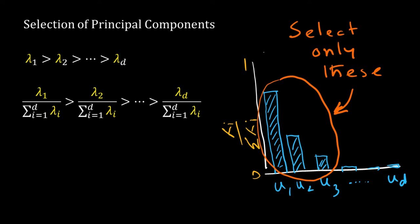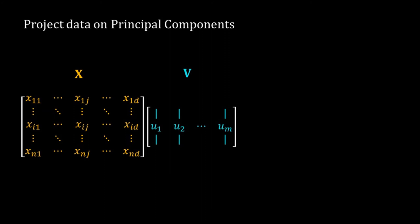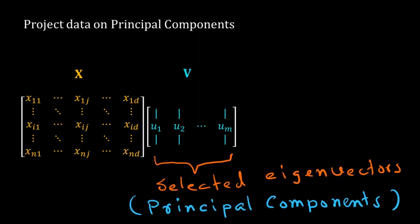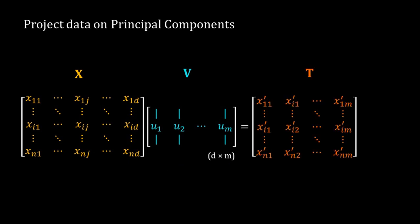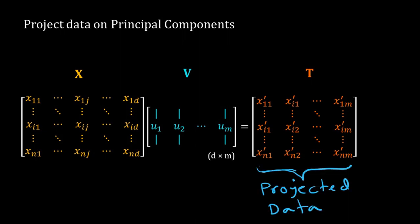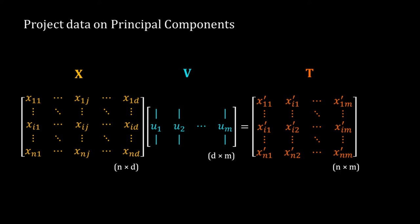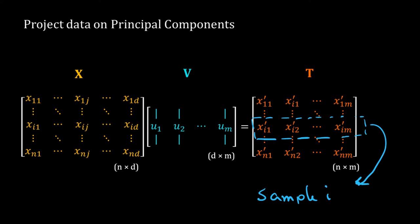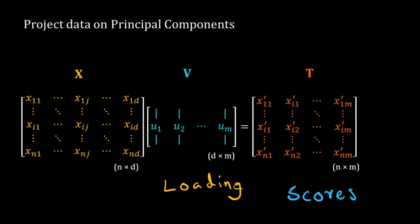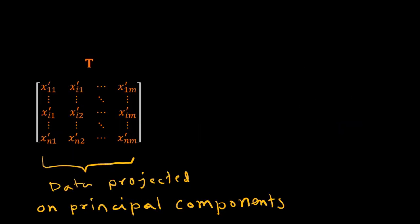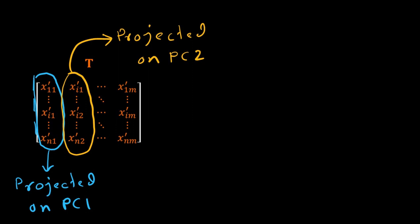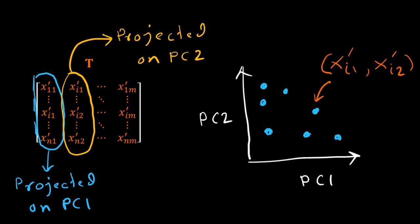I will project my data on the selected eigenvectors, which are the principal components. To project, I multiply X (the data matrix) by V, where V is a matrix of selected eigenvectors or principal components. This multiplication gives matrix T with the projected position for each sample. X is an n by d matrix, so T is an n by m matrix. Each row has the coordinates of a sample projected onto the m principal components. In PCA, T is called the scores matrix and V is called the loading matrix. We can then plot the first two columns of T in a 2D scatter plot showing sample positions in the space of PC1 and PC2.